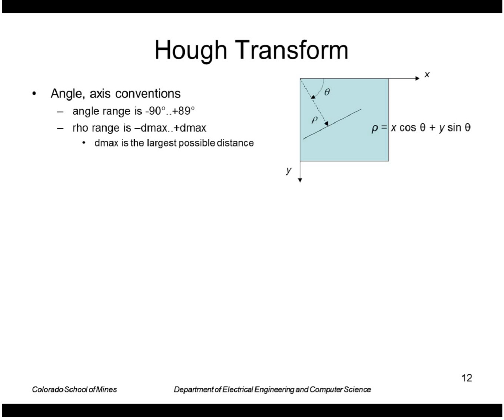In the Hough Transform, let's use these conventions. Let's limit the angle range from -90° to +89°. So +89° would be basically this angle, and -90° would be an angle going up this way.